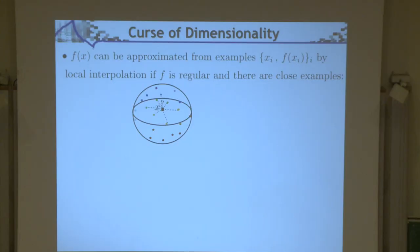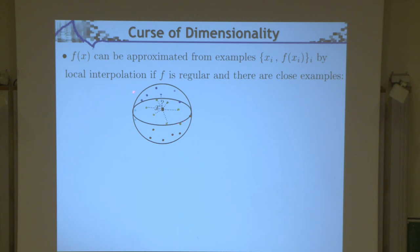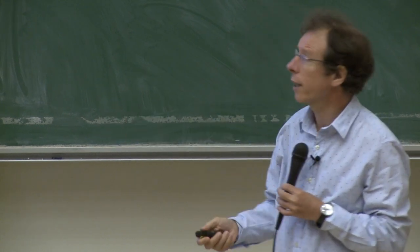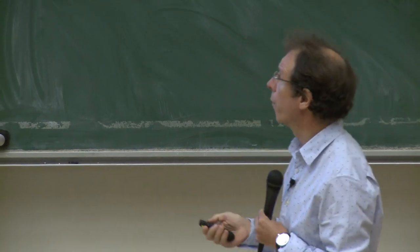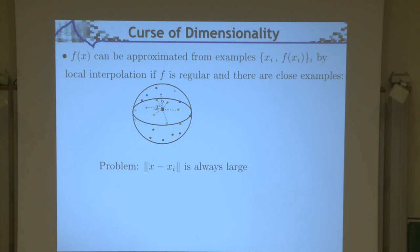Why is the problem so difficult? Naively, one could think this is just a simple interpolation problem, because you want to estimate f of x given the value of f at different points xi. If you have a new point x, the immediate reaction is to take the neighbors where you know the value of the function and average them. That works very well in low dimension. It never works in high dimension, because the neighbors are always extremely far.